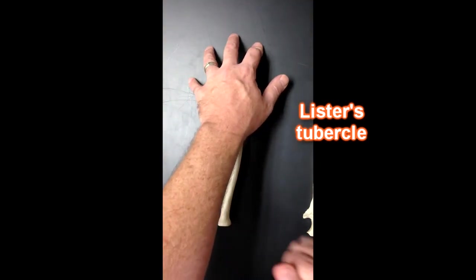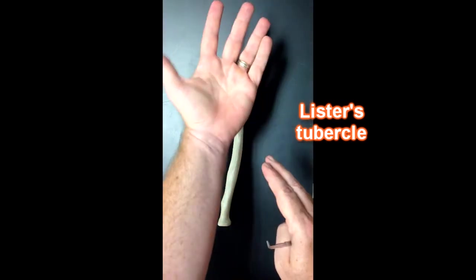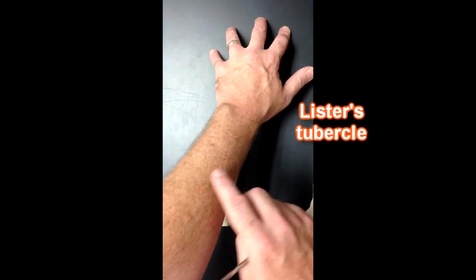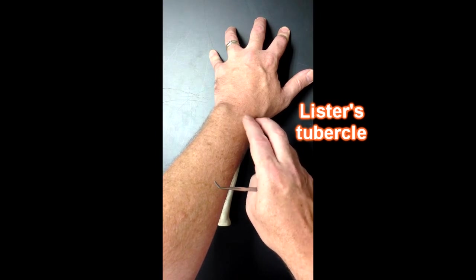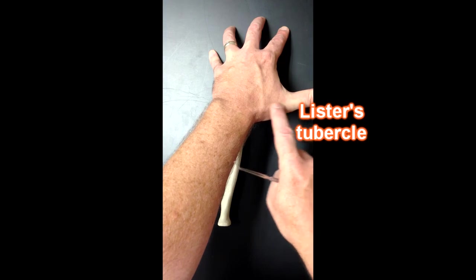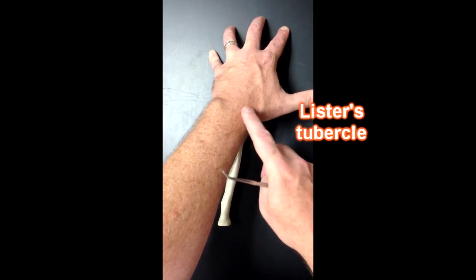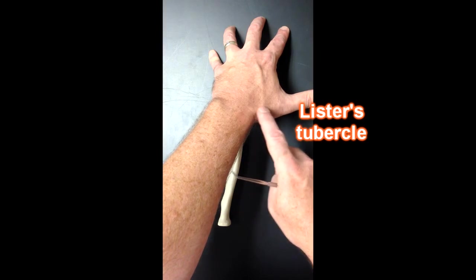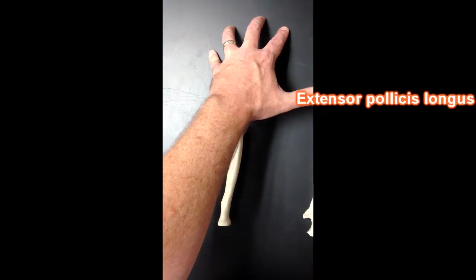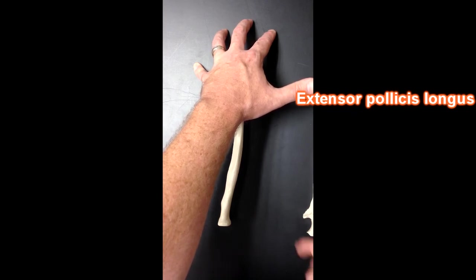If we were to look at the radius over here, now the radius is running across like this because I pronated my forearm. So if we look at the radius and follow it over, there's going to be a bump right here and I can use this tendon to find that bump. That bump is Lister's tubercle and this tendon is the tendon for extensor pollicis longus, a long extensor muscle of the thumb.